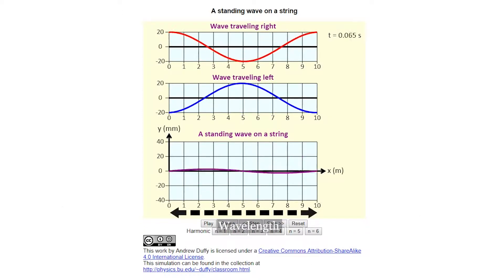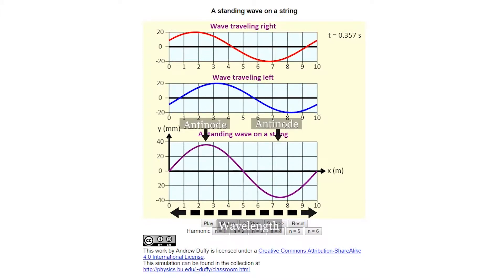The simulation now shows the first overtone, where the length of the string is equal to the wavelength of the wave. It has two antinodes.